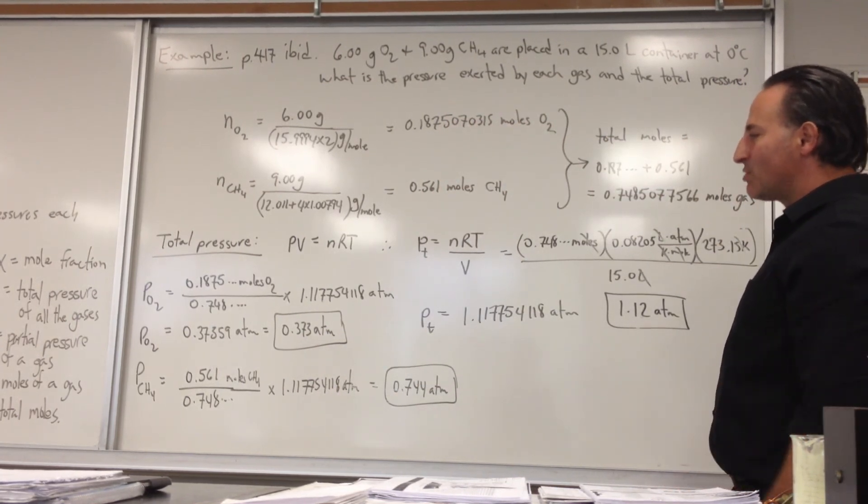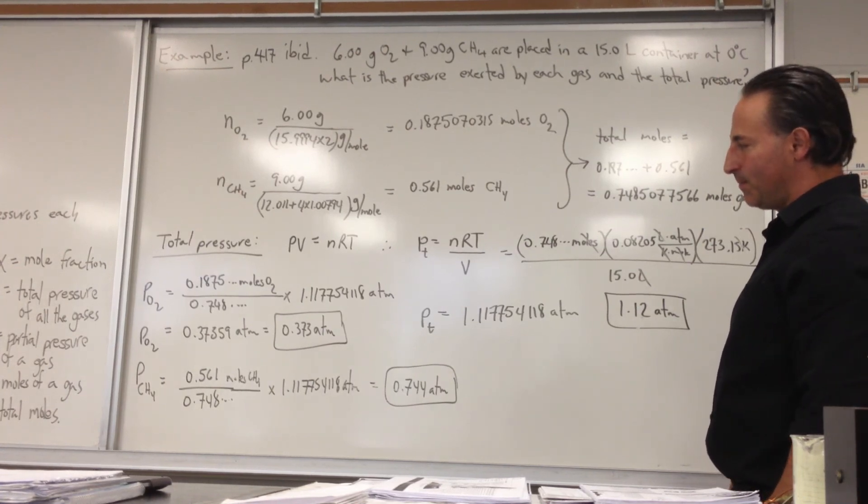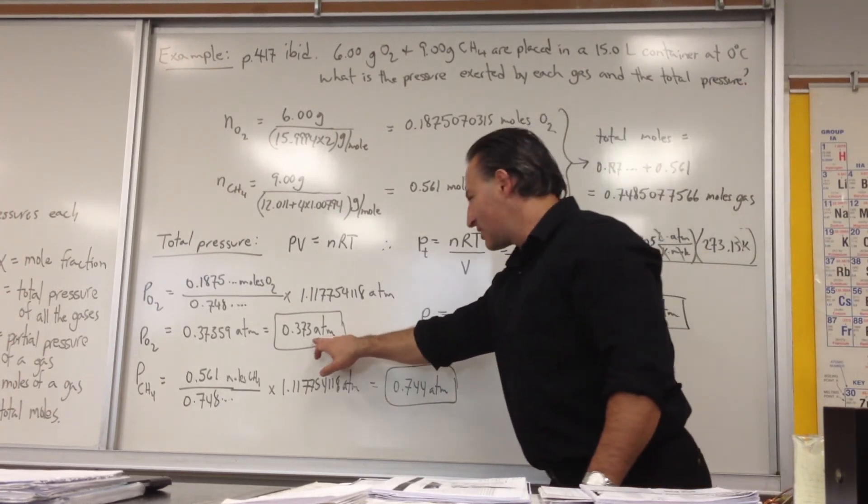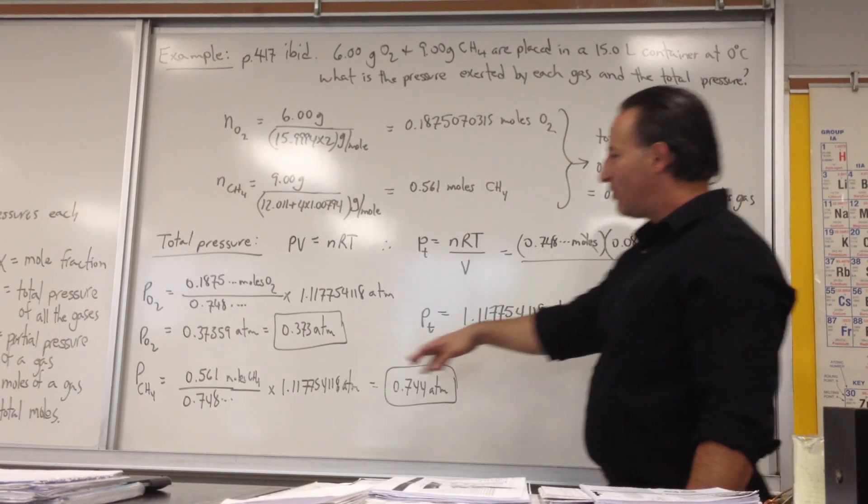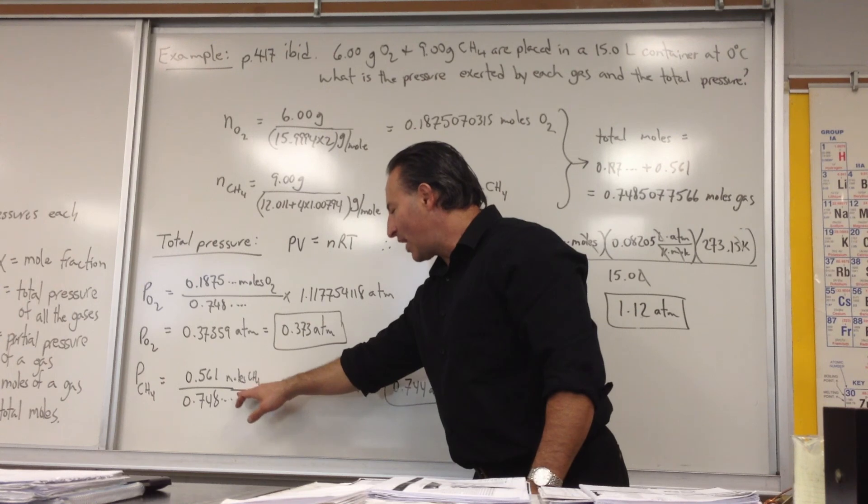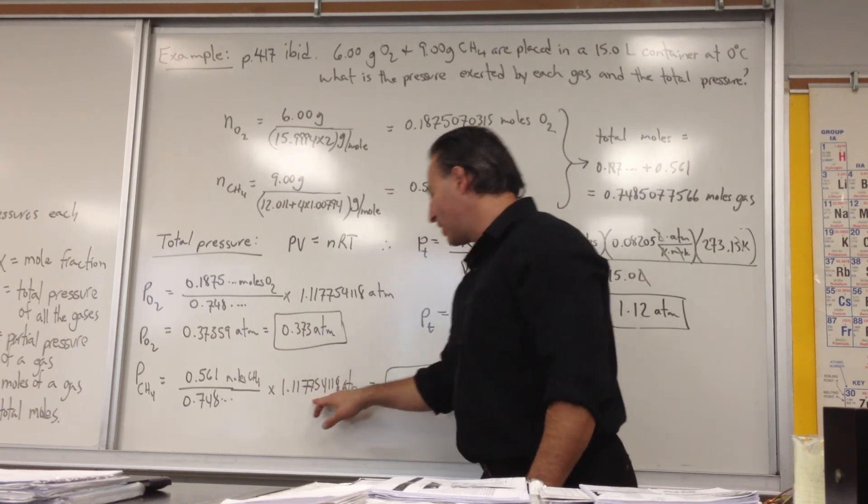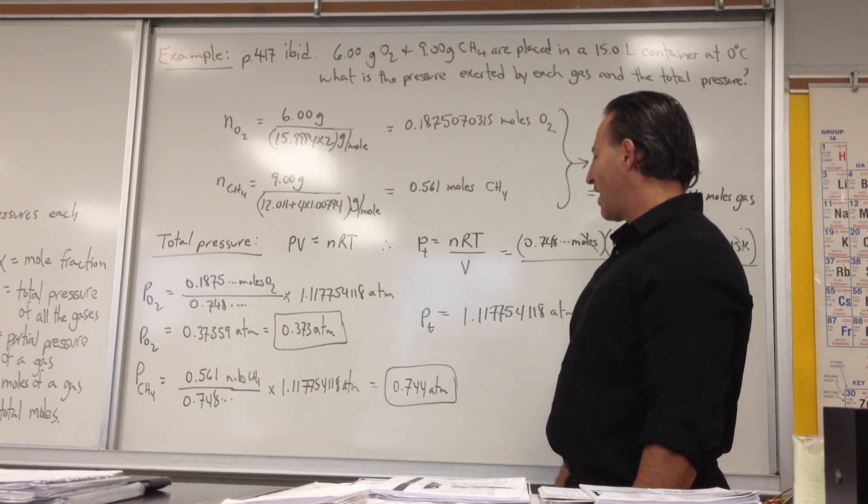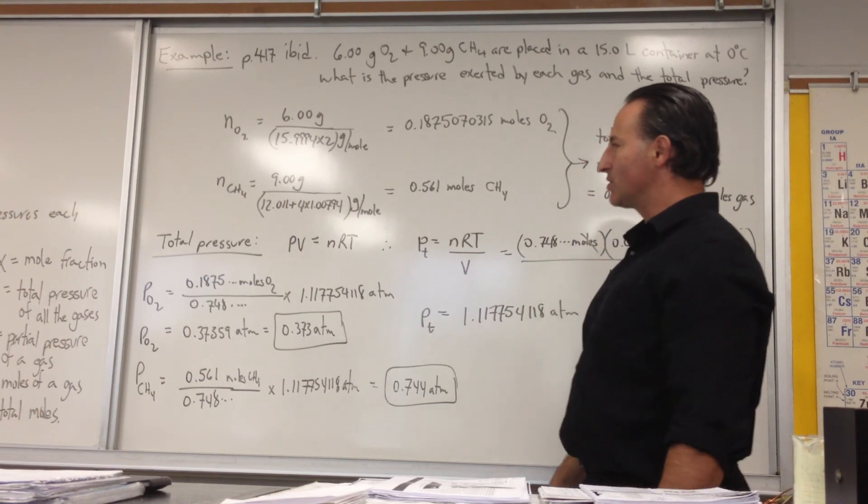Now there's two ways we can find the partial pressure of methane. We can simply subtract this number from the total pressure. Or we can find the mole fraction of methane and multiply it by the total pressure to get 0.744 atmospheres. By the way, you should get the same answer.